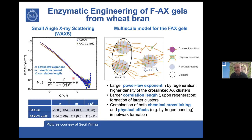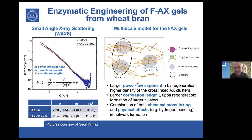This has really helped us understand what happens to our gels, and we're now discussing how to propose a model of the supramolecular organization. We've seen that regeneration causes a larger power law exponent — suggesting a higher density of clusters — and we also find a larger correlation length upon regeneration. Basically we have junctions of polymeric chains with higher order, and more dense, larger clusters at larger size scales. These films combine both chemical crosslinking and physical effects that contribute to network formation and rheological properties.